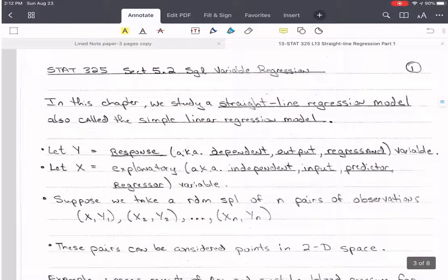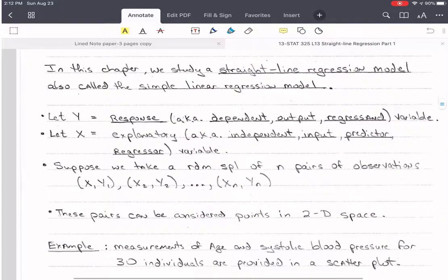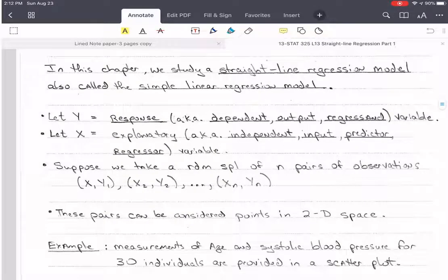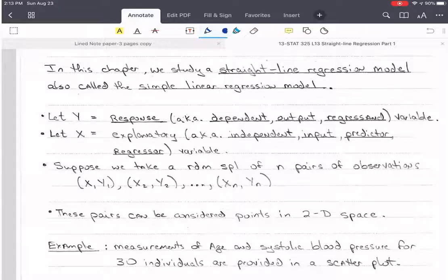Alright, so starting in Section 5.2. In this chapter, we are studying straight line regression model. It's also called simple linear regression. So if you hear simple linear regression, that means a straight line, it means one variable.